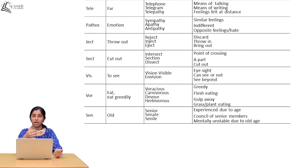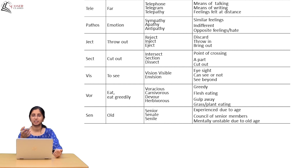The root 'ject' means throw out — so we get reject, inject, and eject. The root 'sect' means cut out — so we get intersect, section, and dissect. And in the meaning of those words, the root word's meaning will appear.